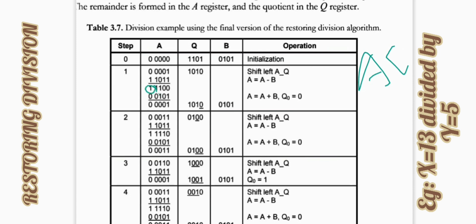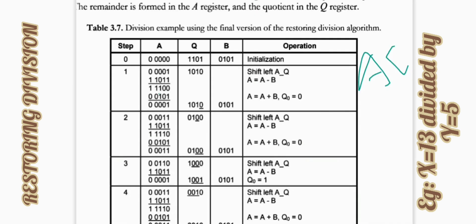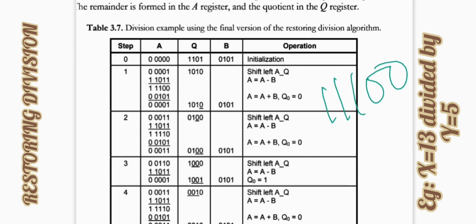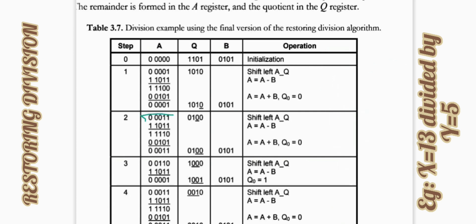The MSB is 1, which means the value is negative. According to the flowchart, if A is less than 0, we have to restore: set Q0 to 0 and perform A plus B. Adding A and B, any carry is discarded. This completes the first cycle: we shifted, performed A minus B, found A negative, set Q0 to 0, and restored A by adding B.